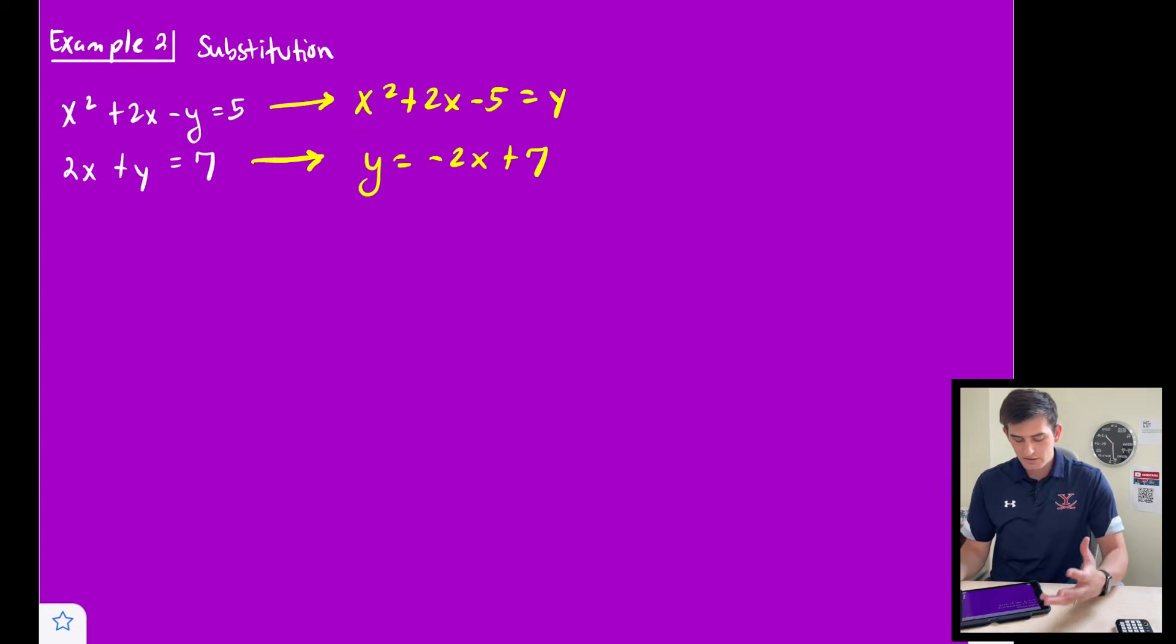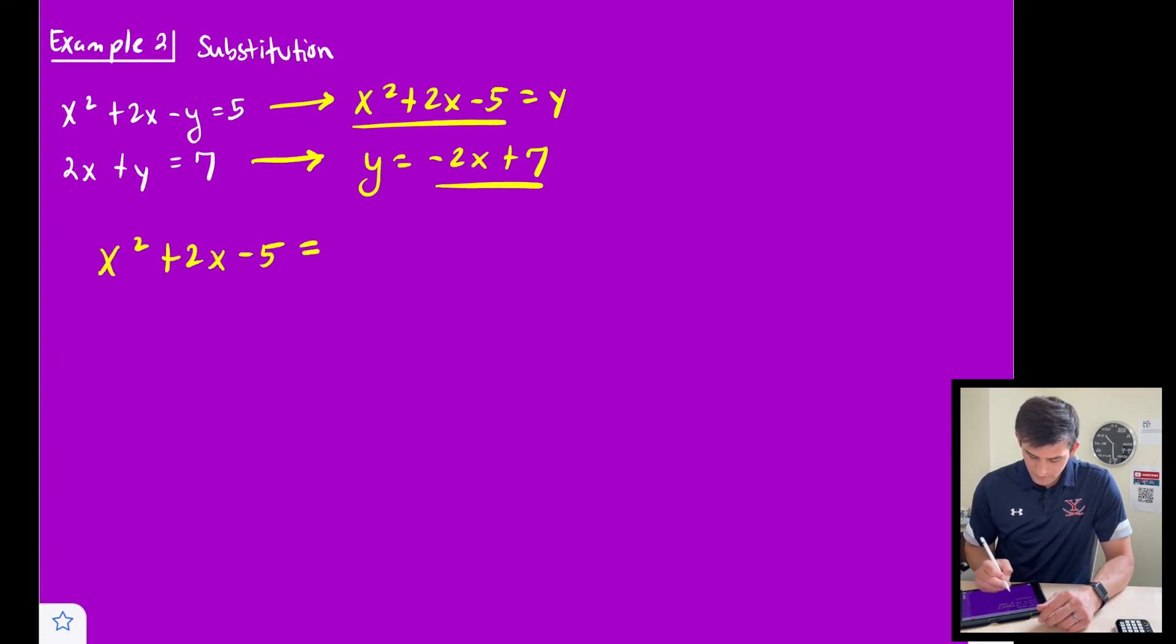So now, since both of these are equal to y, we can now set the two expressions equal to each other. So let's write this as x² + 2x - 5 = -2x + 7.